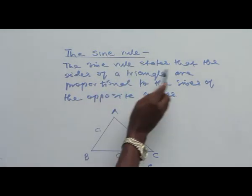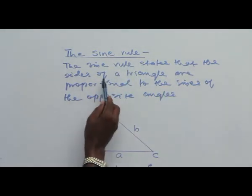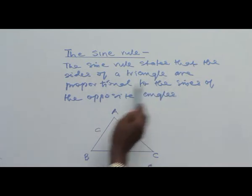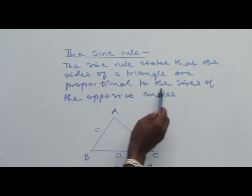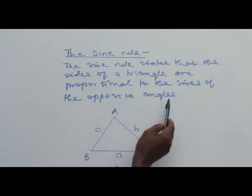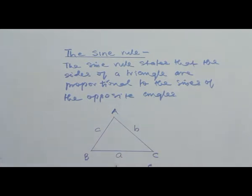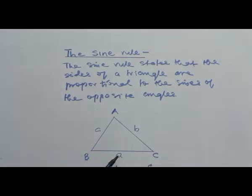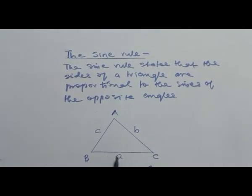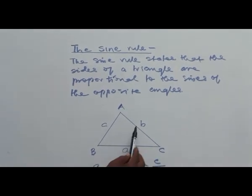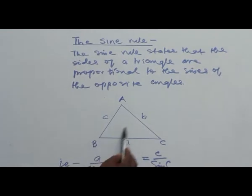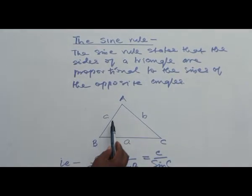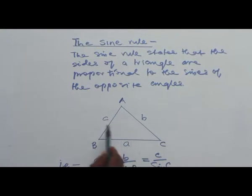The sine rule states that the sides of a triangle are proportional to the sines of the opposite angles. Here is triangle ABC. The side opposite angle A is labeled small letter a, the side opposite angle B is labeled small letter b, and the side opposite angle C is labeled small letter c.